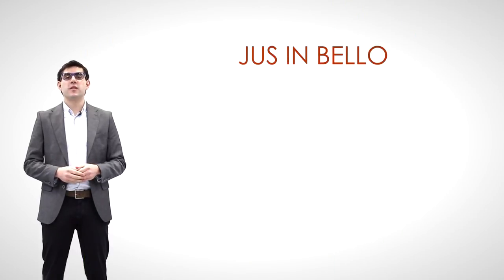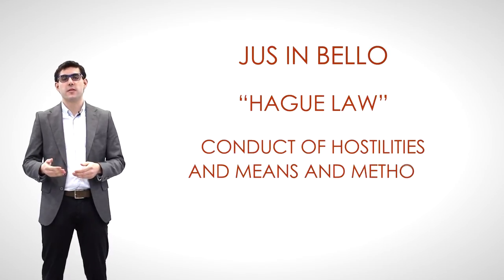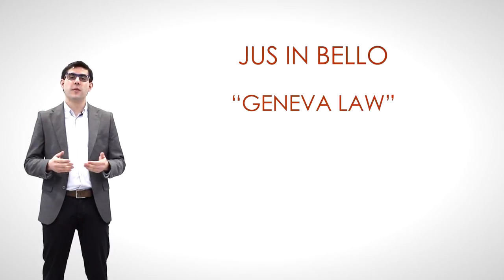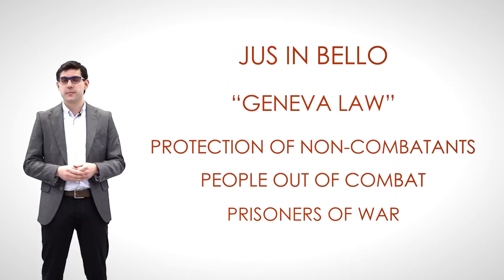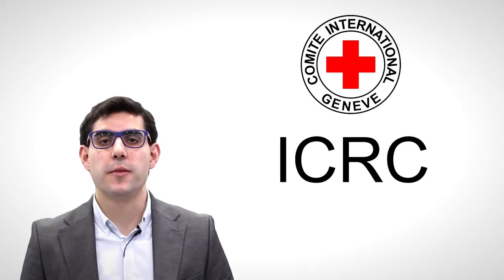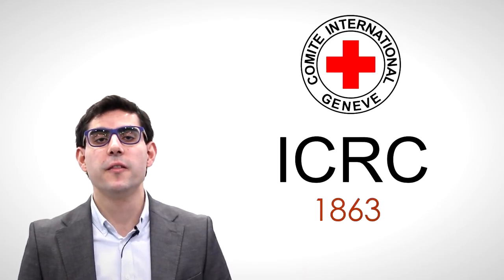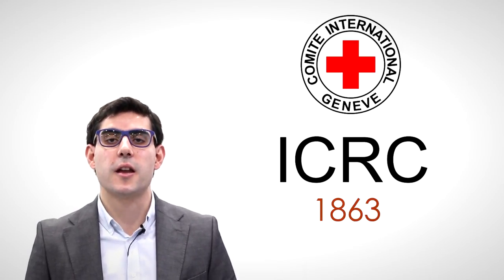Jus in bello was traditionally divided into the Hague Law, regarding the conduct of hostilities and means and methods of combat, and the Geneva Law, which has to do with the protection of non-combatants — that is, civilians and people unable to combat or out of combat, including prisoners of war. It is generally accepted that with the enactment of the two additional protocols of 1977, this distinction is superfluous. Noteworthy also is the role played by the International Committee of the Red Cross, a humanitarian organization founded in 1863 to relieve human suffering during armed conflicts, whose opinions are deemed authoritative in international humanitarian law.